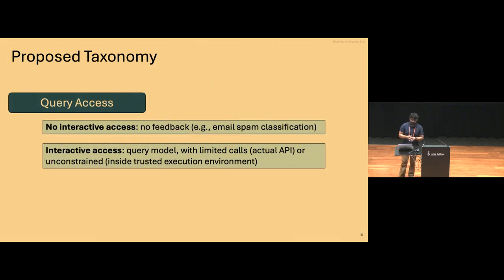So the very first axis we propose is based on query access. And what this really means is, do you really have interactive access to the target model or is it the case that you generate your perturbation and just package and send it to the model and hope that it works out? Or do you have interactive access so you can get some sort of feedback and refine your perturbations based on whatever you get back?